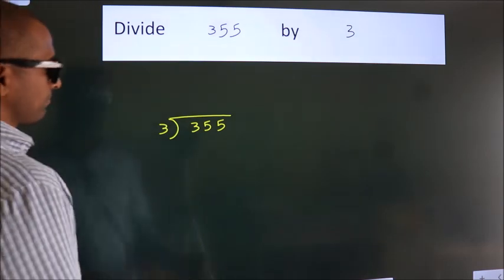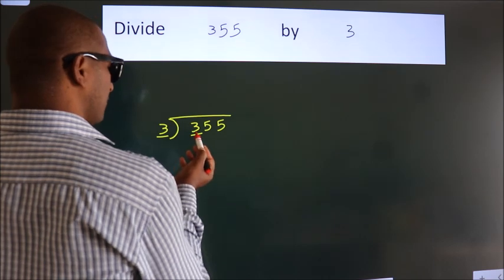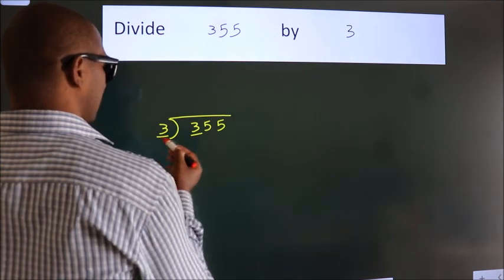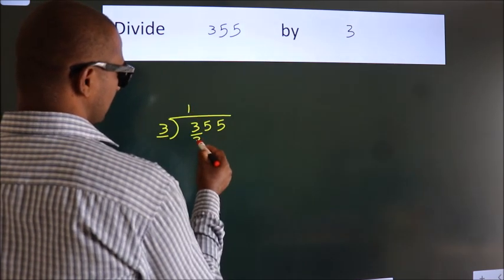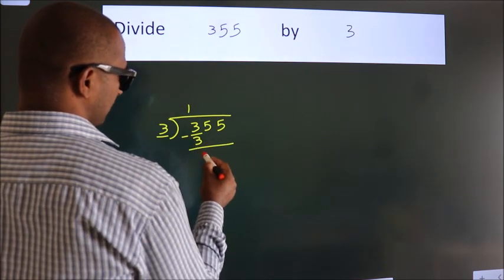Next. Here we have 3. Here 3. When do we get 3? In 3 table, 3 once, 3. Now, we should subtract. We get 0.